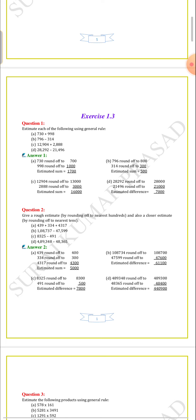So let me start. First question: 730 plus 998. We have to estimate the sum using the general rule. When we round off 730, the nearest value at the hundreds place is 700. The next number, 998, rounds off to 1,000. So the estimated sum is 1,700.